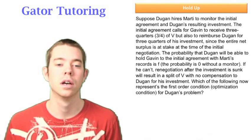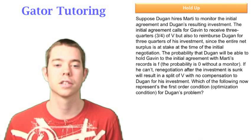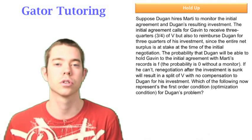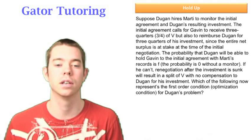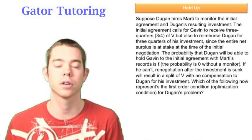The next question says, suppose Dugan hires Marty to monitor the initial agreement and the resulting investment. It tells us that Marty can sometimes hold Gavin to the initial agreement and Gavin will have to reimburse Dugan for three-fourths of the investment. It says the probability that Dugan will be able to hold Gavin to the initial agreement with Marty's records is f.